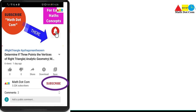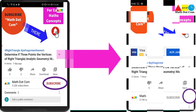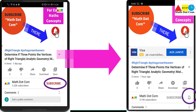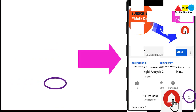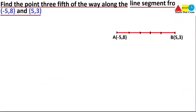Please subscribe and don't forget to hit the bell icon for new video notifications. Today we are going to find the point that divides the given line segment in a 3 to 5 ratio.